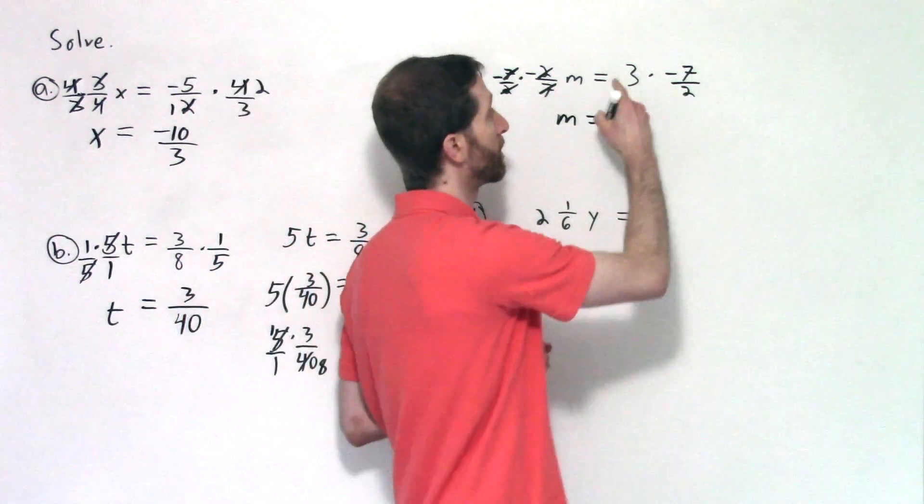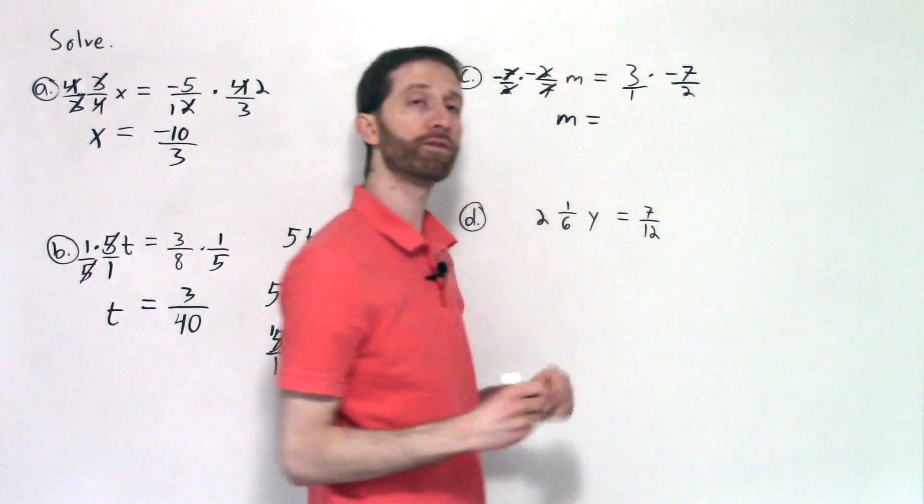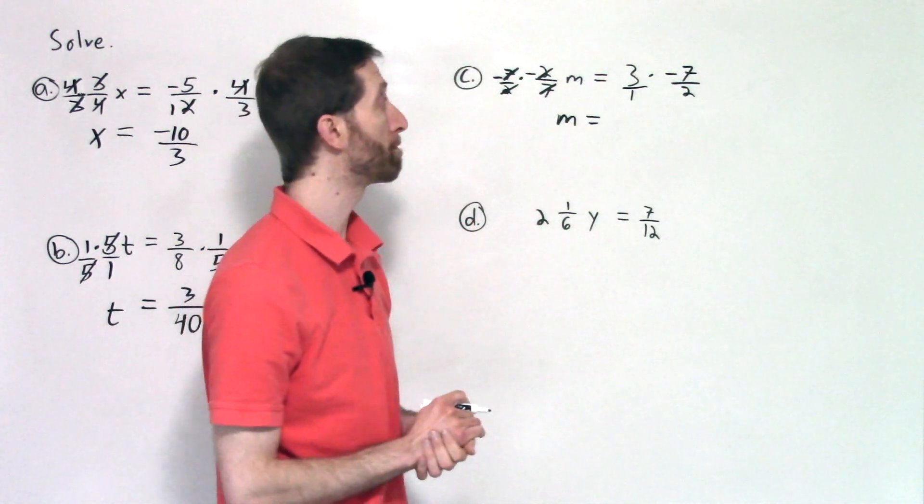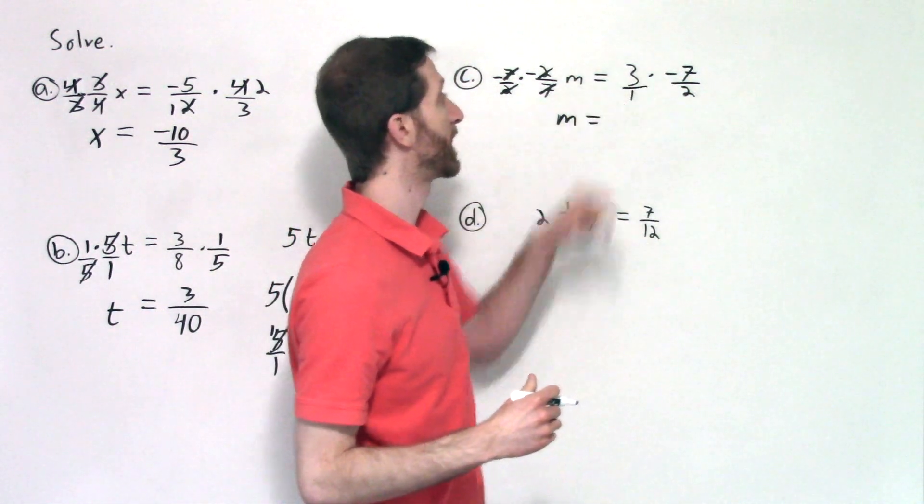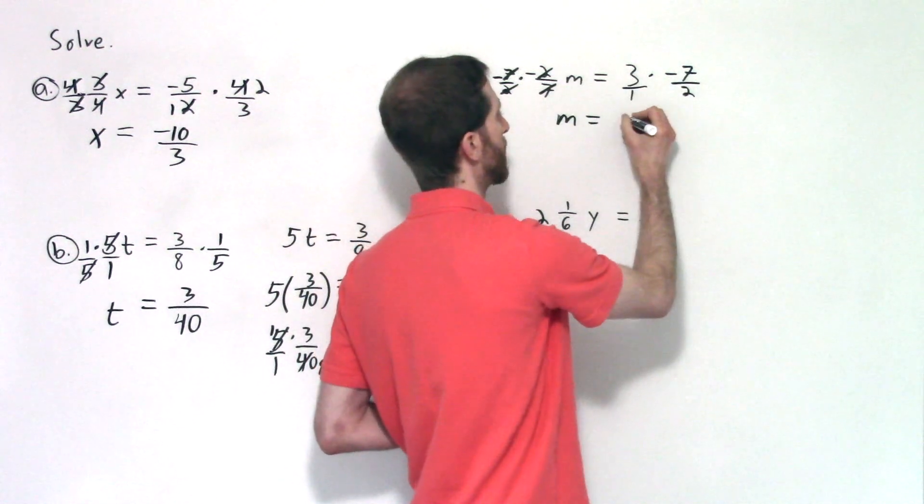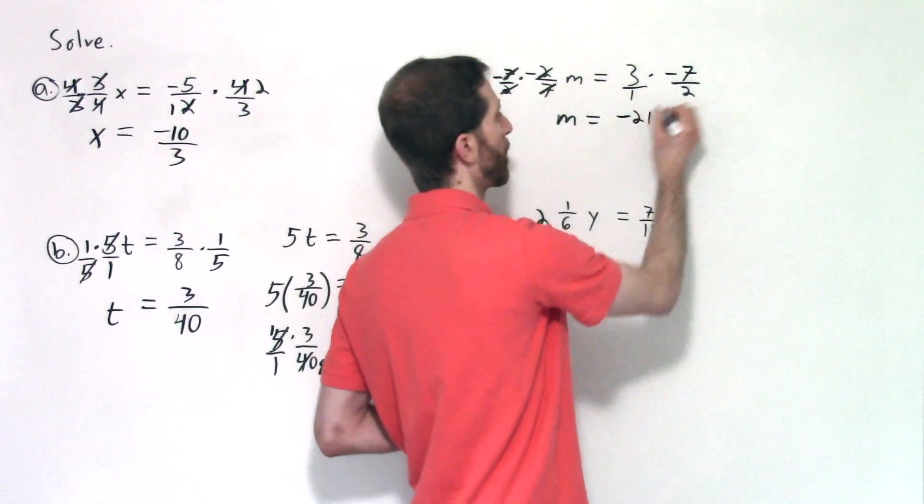On the right-hand side, you have three times negative seven halves. It may be easier for you to view three as three over one. We have no greatest common factors in the numerators compared to the denominators. So now I'll multiply three times negative seven is negative 21 over one times two.